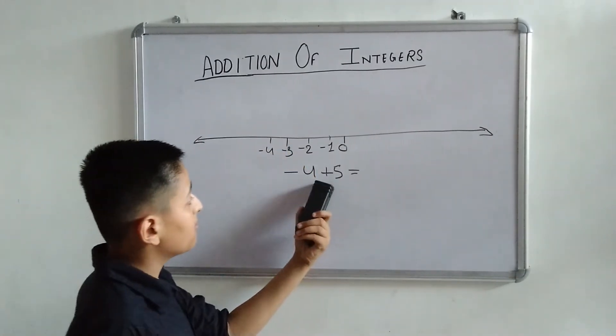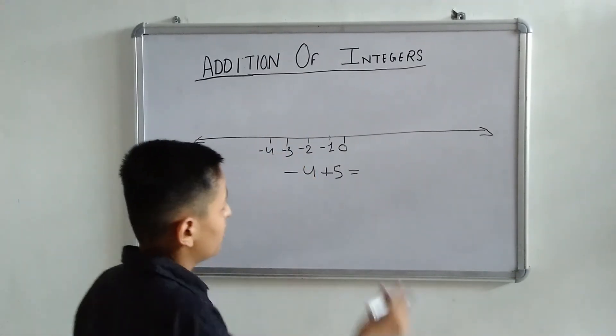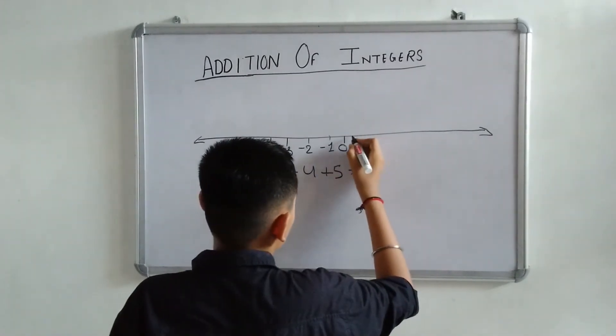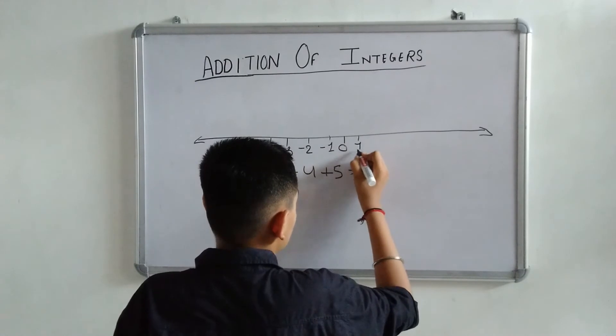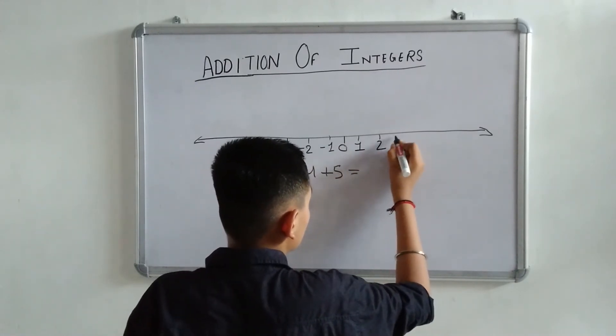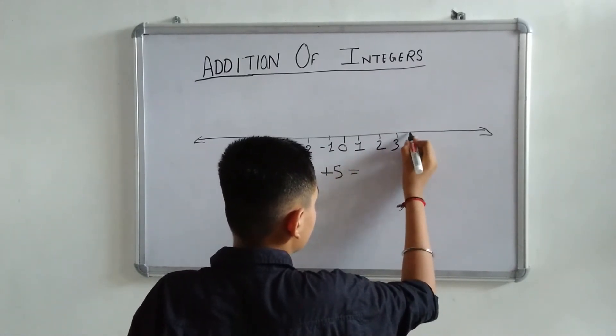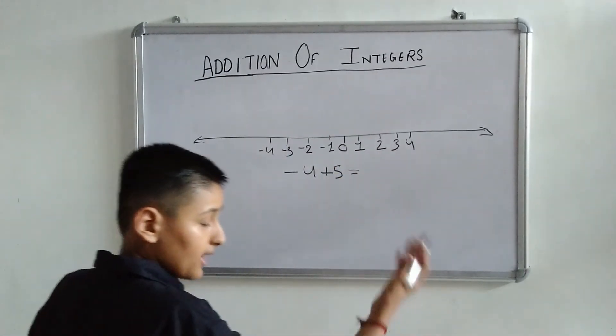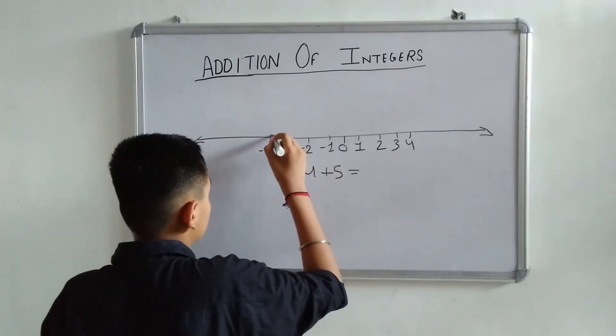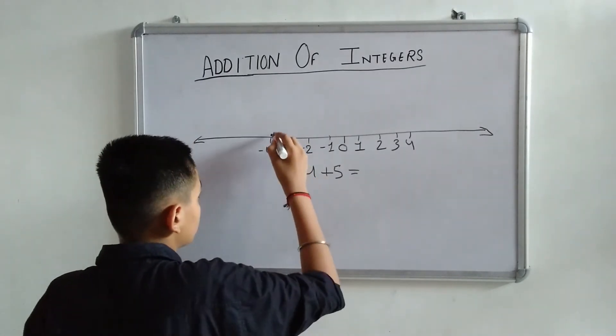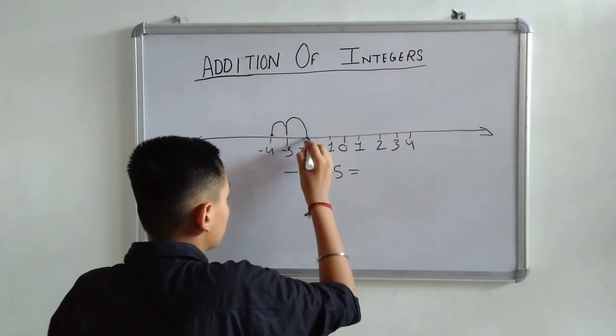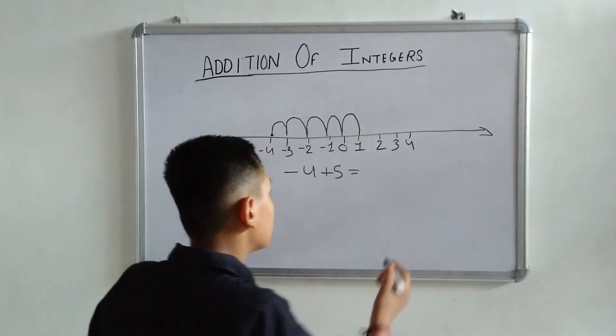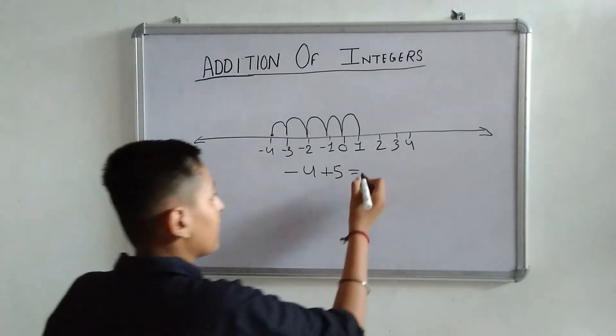Okay friends! It said plus 5. We have to go on left-hand side. Sorry, right-hand side: 1, 2, 3, 4. Okay friends! Let's go on right-hand side. This is our point minus 4. Jump! 1, 2, 3, 4, 5. Our answer will be simple: 1.